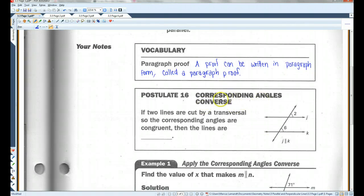Alright, postulate 16. Corresponding angles converse. If two lines are cut by a transversal, so the corresponding angles are congruent, then the lines are parallel.